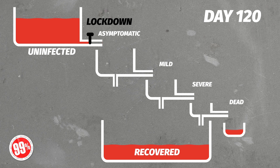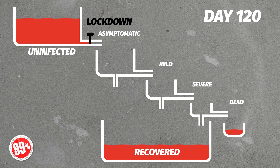We still had to wait for all the people who were in the system at the time of lockdown to work their way mainly through into the recovered vessel, but still some into the dead vessel. And so what that means is that even an effective lockdown won't show up immediately in the death rates.